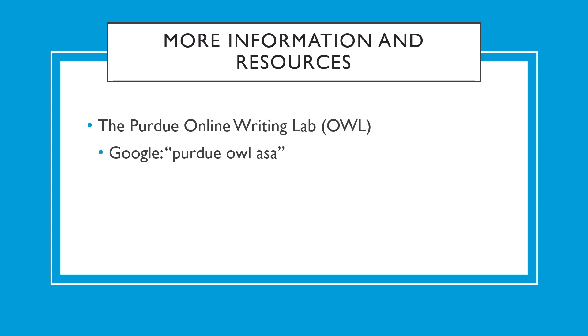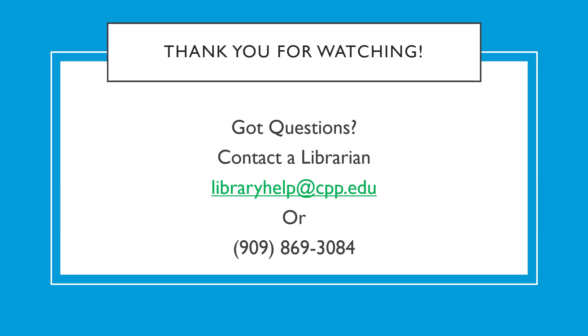Obviously, there are a lot more types of sources to cite than just books, and there are a lot more situations for citing books than we've covered in this brief video. If this video didn't answer your question, there are more resources available to help you cite your work. The Purdue Online Writing Lab, or OWL for short, provides an excellent website covering a lot of different scenarios and rules for ASA citation — simply type 'Purdue OWL ASA' into Google or the search engine of your choice. Finally, you can always contact the librarian for citation assistance. You can email us at libraryhelp@cpp.edu or call us at 869-3084. Thank you for watching.